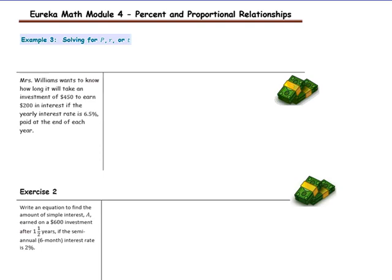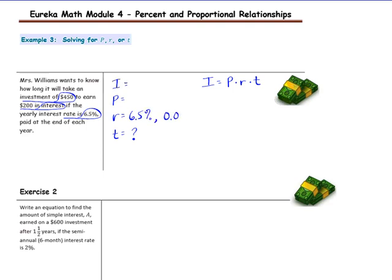In example three, we'll be solving for either the principal, the rate, or the time. We start with the same formula: interest equals principal times rate times time. Mrs. Williams wants to know how long it will take an investment of $450 to earn $200 in interest, if the yearly interest rate is 6.5% paid at the end of each year. The question is asking how much time it will take, so our question mark is for T. The rate is 6.5%, which as a decimal is 0.065. The principal is $450.